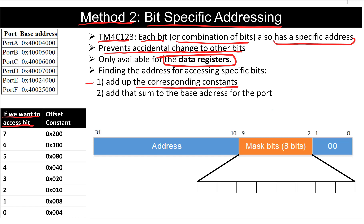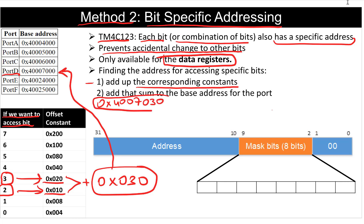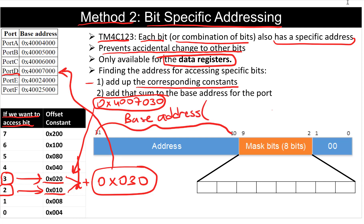For example, if I want to access bit 2 and bit 3, there are corresponding offsets for each bit. Adding those up I get hex 0x30. Then this constant is added to the port base address. For example, if the base address is 0x4000 5000, the new address would be 0x4000 5030, allowing access to bit 3 and bit 2. This address field uses the top 22 bits (bits 10 to 31) as the base address portion, with the remaining section as the offset.